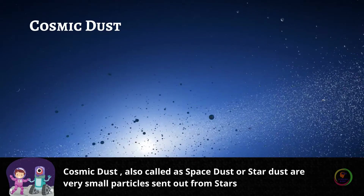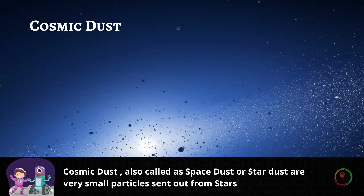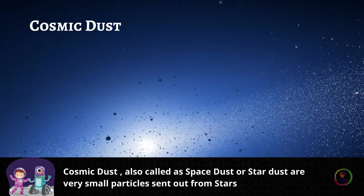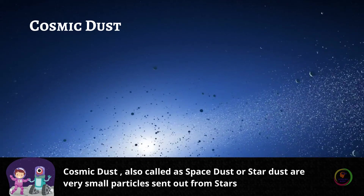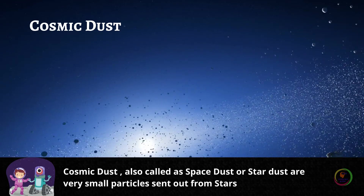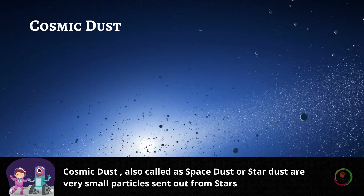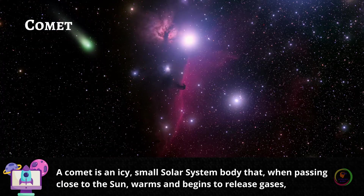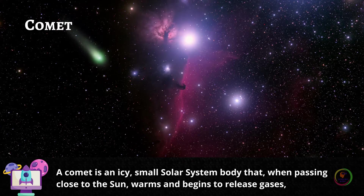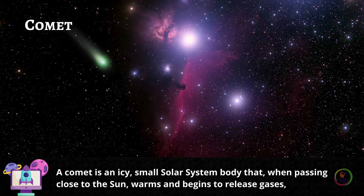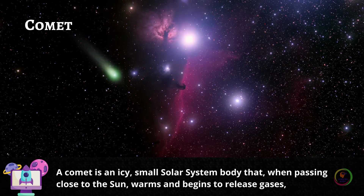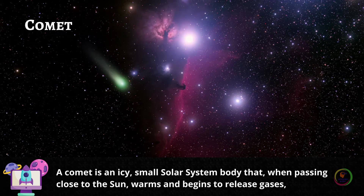Cosmic dust, also called space dust or star dust, are very small particles sent out from stars. A comet is an icy small solar system body that, when passing close to the sun, warms and begins to release gases.